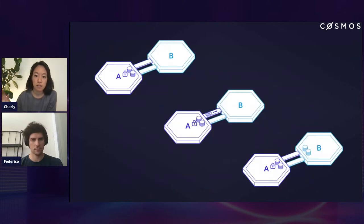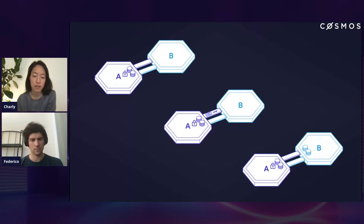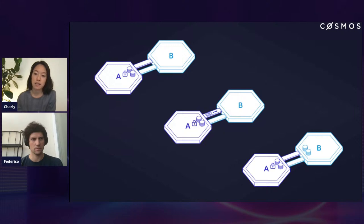All of this IVC layer on top is supported underneath by something called a relayer infrastructure. This is important to understand because some of you may have experienced transactions taking a little bit longer than you thought they might. This is not due to your funds disappearing or getting stuck somewhere — it's actually 99.9% of the time because the relayer infrastructure has not picked up the transaction yet.